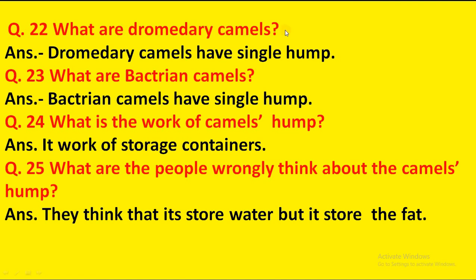What are dromedary camels? Dromedary camels have a single hump. What are Bactrian camels? Bactrian camels have two humps. What is the function of a camel's hump? It works as a storage container. What do people wrongly think about the camel's hump? They think it stores water, but it actually stores fat. Thank you.